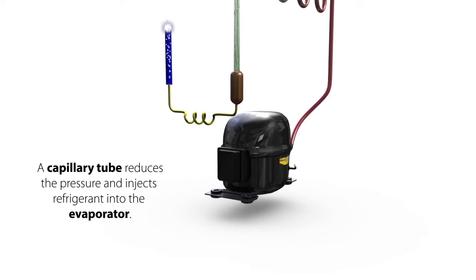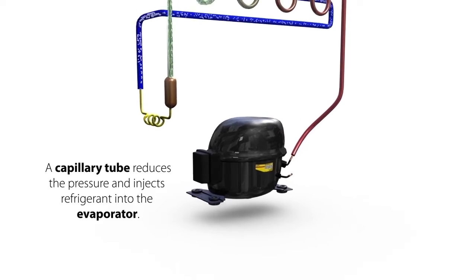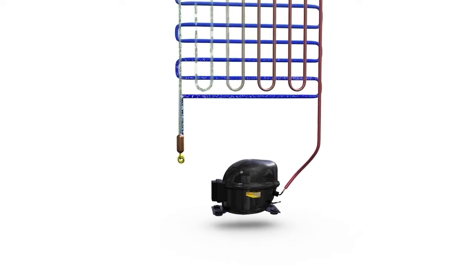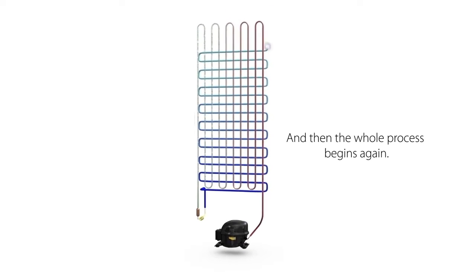A capillary tube reduces the pressure and injects refrigerant into the evaporator. And then the whole process begins again.